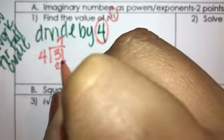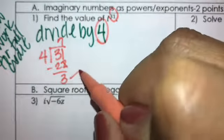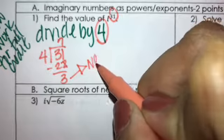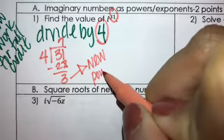I'm going to get 7 remainder 3, so 3 is the new exponent or the new power.